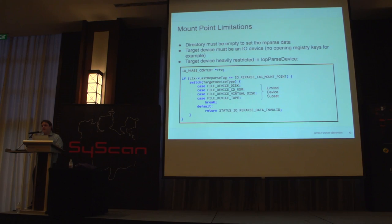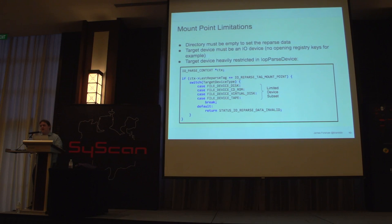There are some limitations to mount points. The biggest one from an attack perspective is the directory has to be empty — you can't just change a directory in the hierarchy to a reparse point, it must contain no other files or directories. It also must target a particular I/O device — only local devices, not remote file systems. So you can't do clever stuff like redirecting to named pipes, because the object manager just will not have it.